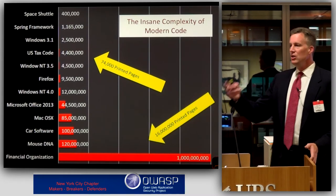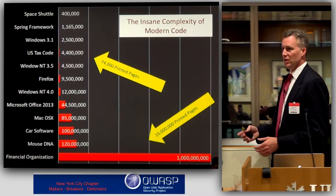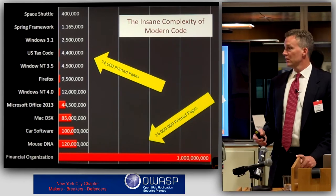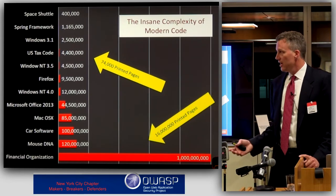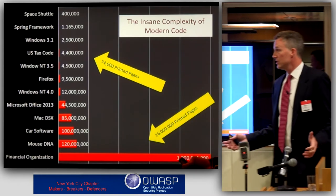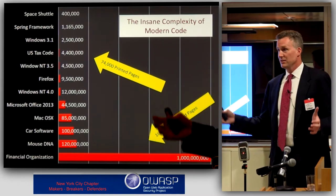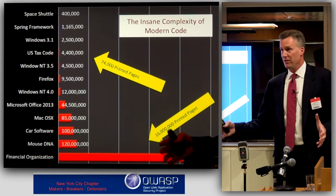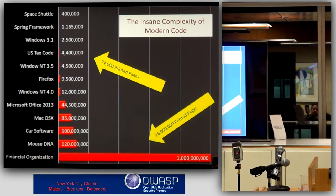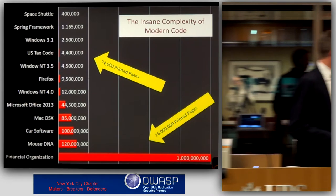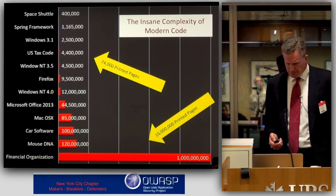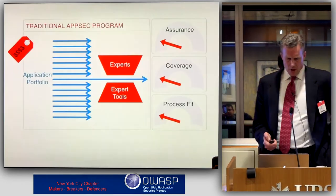How long would it take you to go through the U.S. Tax Code and find all the loopholes? We're being asked to do that in the course of a week or two-week pen test and code review effort. It's a staggering job to do right. This is important for people to understand — just how hard this job is at scale.